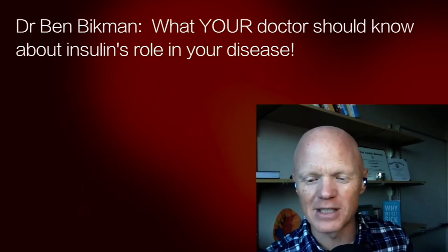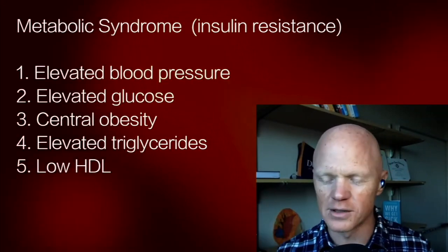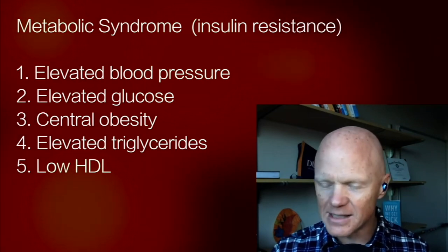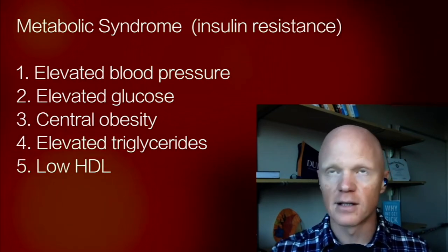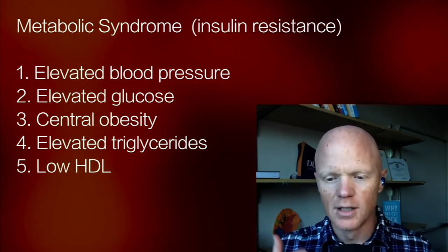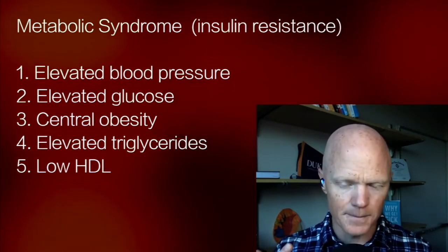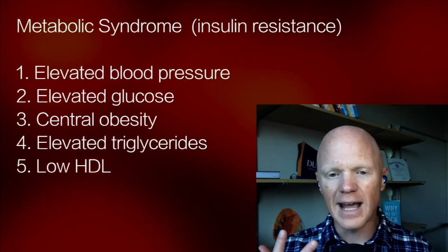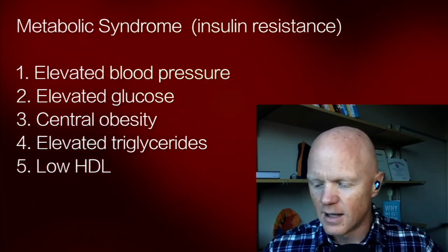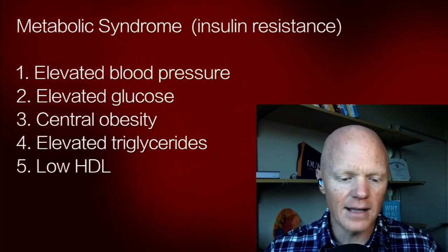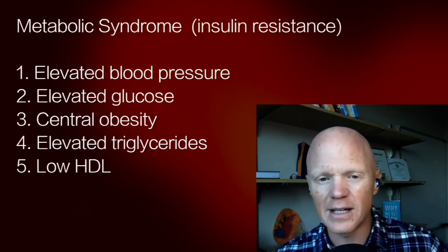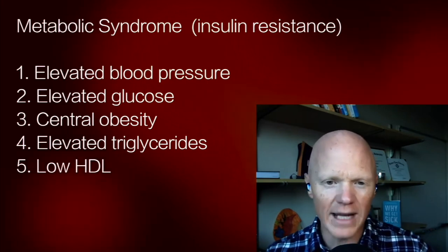Metabolic syndrome, as I mentioned, is a constellation of five disorders. Over the years there have been a few rolling definitions, but the consensus has settled on these five: elevated blood pressure — hypertension; elevated glucose levels; elevated waist circumference, so central obesity or adiposity; and the fourth and fifth are related — elevated triglycerides and low HDL.